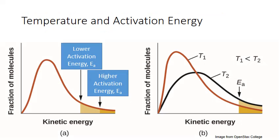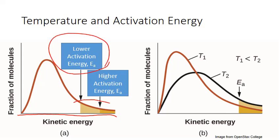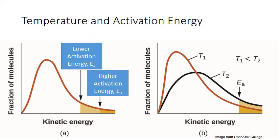Thermal distribution curves can also help us see the influence of changing activation energy and temperature on the fraction of molecules that have enough energy to form an activated complex. The first diagram shows the influence of changing activation energy on that fraction of molecules. With lower activation energy, more molecules have enough energy to actually form an activated complex — so more molecules are above the activation energy threshold. If you increase to a higher activation energy, it's a smaller fraction of molecules.